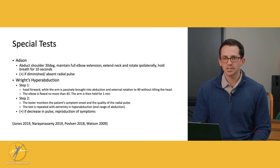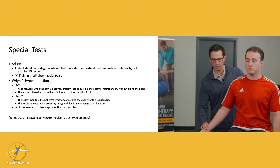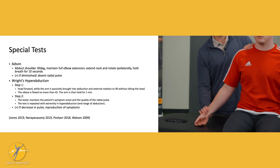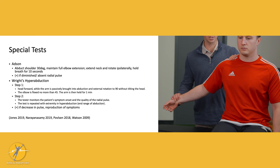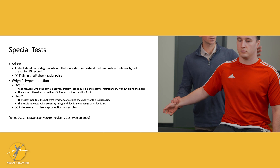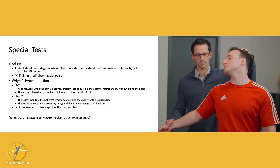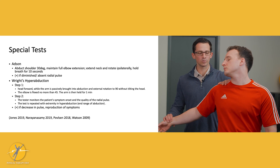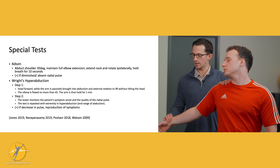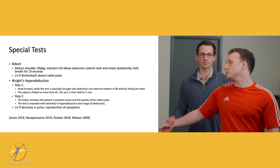The ADSEN special test is one that we'll go over. To perform this test, you're going to take your patient's arm, palpate that radial pulse, abduct it to about 30 degrees and keep it in a slightly extended position. Have the patient extend their head back and rotate to that same side. Hold this position and have them take a breath in and hold it for 10 seconds while you feel the pulse.